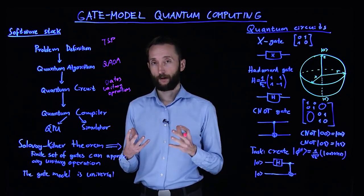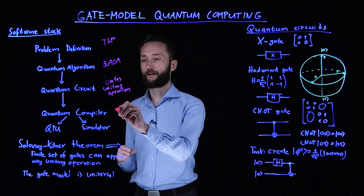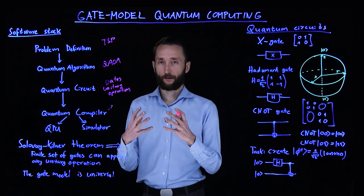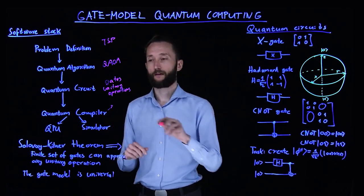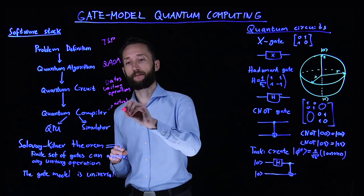This compilation does mainly two things. One, if you have a set of gates and this set of gates is not implemented by the quantum computer, then it does a translation. So it considers actual set of gates implemented in the hardware.